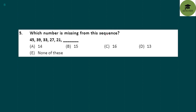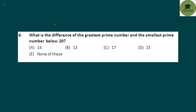Which number is missing from the sequence: 45, 39, 33, 27, 21? If you see the sequence, there is a difference of 6 — each number is 6 less than the previous one. So 21 minus 6 gives you 15. Option B is your correct answer.